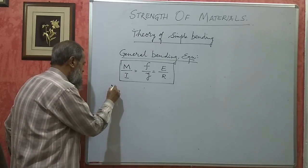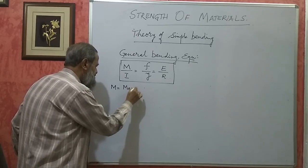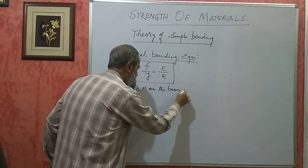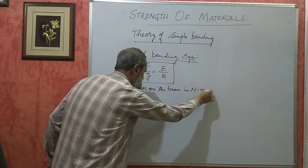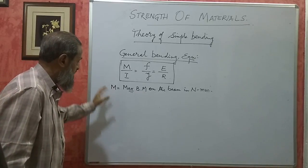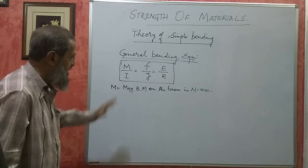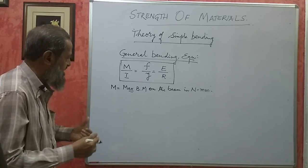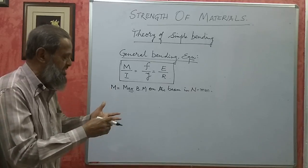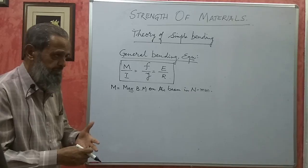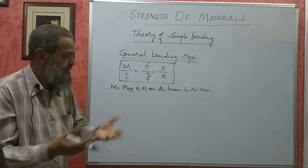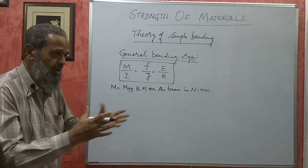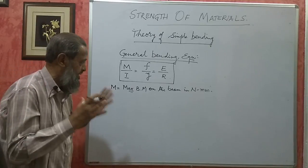In this equation, M is the maximum bending moment on the beam — whether it is a cantilever, simply supported beam, or any other type. Sometimes it may not be directly given; it will be given indirectly or you may have to find it out. To know the maximum bending moment, we should know the nature of the beam — whether it is cantilever or simply supported, whether it is loaded with UDL or point load, and what its span is.